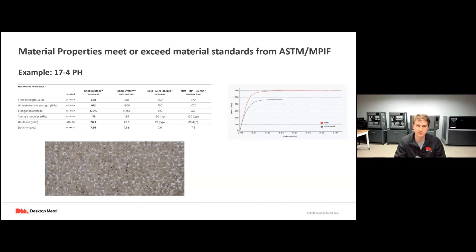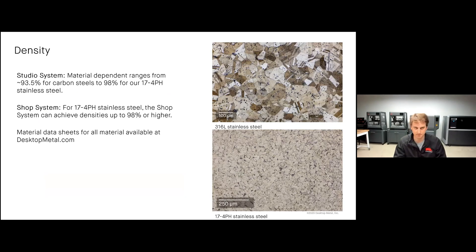Looking at a 17-4 PH stainless steel printed on our Shop System, you can see that yield strength just off the printer is about 660 megapascals, gets all the way up to 980 with the heat treatment. Compared to a metal injection molded component, you can see that we're exceeding those MPIF 35 standards, ensuring that these parts are excellent for these industrial processes. When looking at density on the Studio System, it depends a little bit on the material. On our carbon steels, we're about 94%, 93.5% and higher. On 17-4 PH stainless steel, we're up to 98% dense, so similar to a cast component, or if not higher, depending on the casting method. On the Shop System, we're achieving densities on 17-4 PH of over 98%, making it a great material for a wide variety of different applications. And of course, if you want to hear more about our specific material properties, you can head over to our website and all of our material data sheets are available for download to understand the exact material properties you're going to get from each of our printed materials.